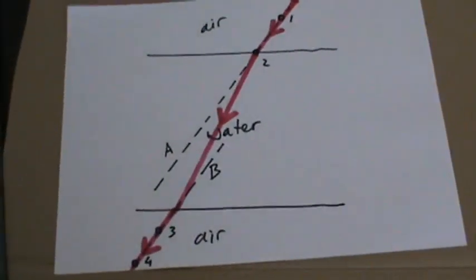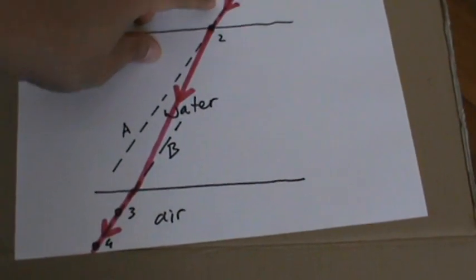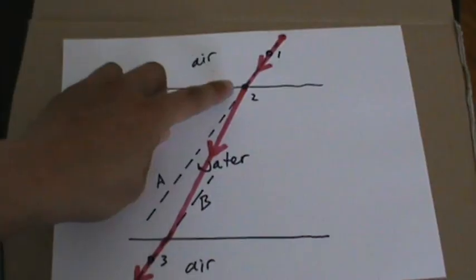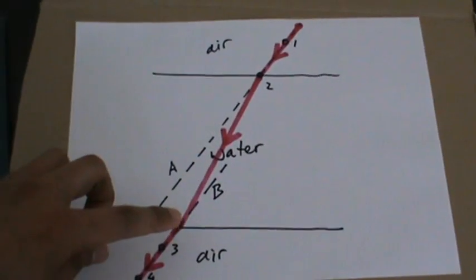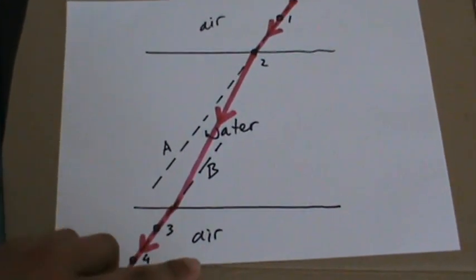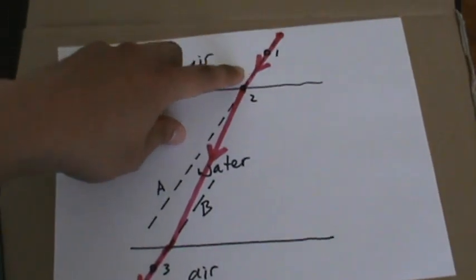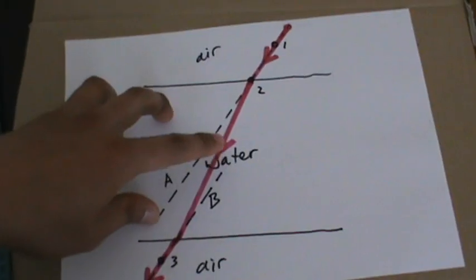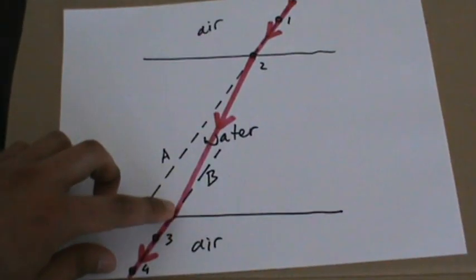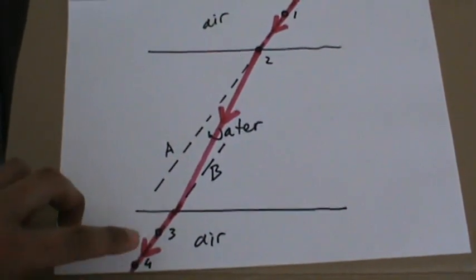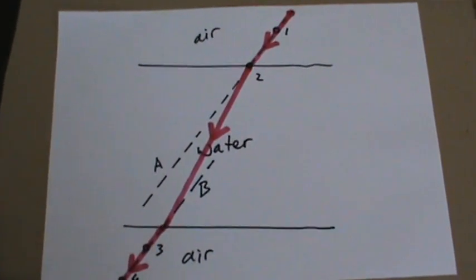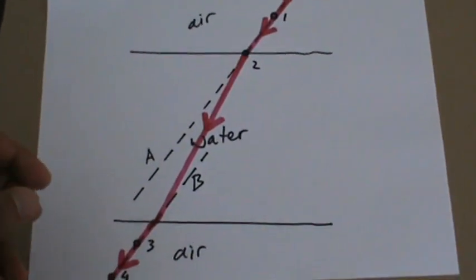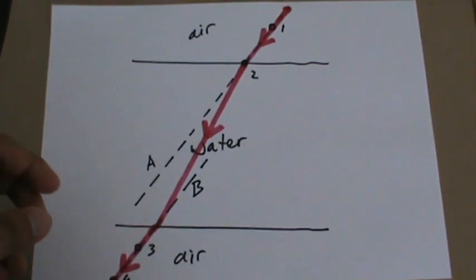What we see here is how light travels from the air and then going to the water and then going out to the air again. And as you can see here, the light is bent from air to water and then it's bent again from water to the air. And that's what happens when the light travels through different mediums.